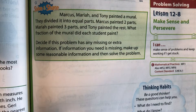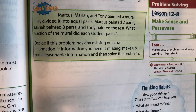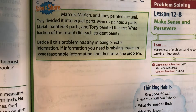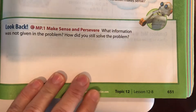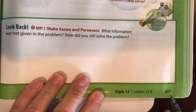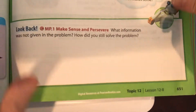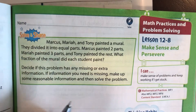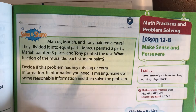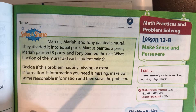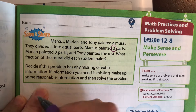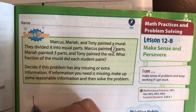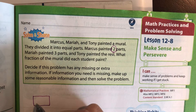We're going to go through lesson 12-8. I just want you to do this whole lesson with me. This is page 651. So Marcus, Mariah, and Tony painted a mural. They divided it into three equal parts. Marcus painted two parts, so here we have Marcus.